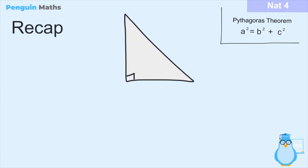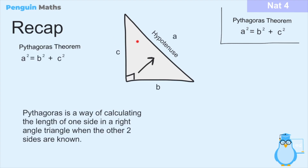Let's recap what we've covered. The side opposite the 90 degree angle in a right angle triangle is called the hypotenuse, and it's always the biggest side. If two sides of a right angle triangle are known, we can calculate the other using Pythagoras's theorem — the way of calculating one side when the other two are known. We do this using the equation a squared equals b squared plus c squared, where a is always the hypotenuse. I hope this video has been helpful — if you have any questions don't hesitate to ask. See you in the next video!